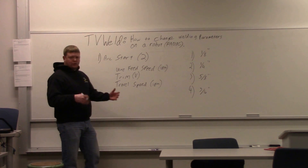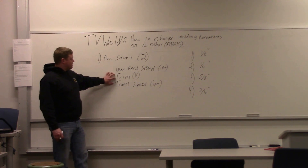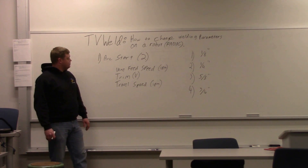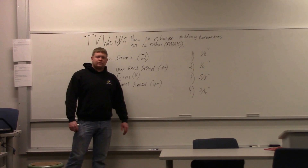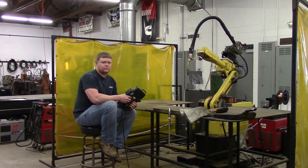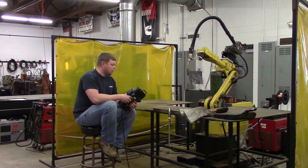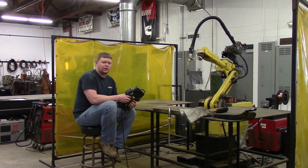So we're going to go out there — I'm programming the robot, do a little stringer bead — and then we'll adjust this stuff on the teach pendant and show you how to do it. We'll get out in the lab and program this robot. What we're going to do is start off by programming a two-inch stringer bead. A quick little program. I don't know what the parameters are set to right now, but I'm just going to run whatever it is and then show you how to change them on the teach pendant.